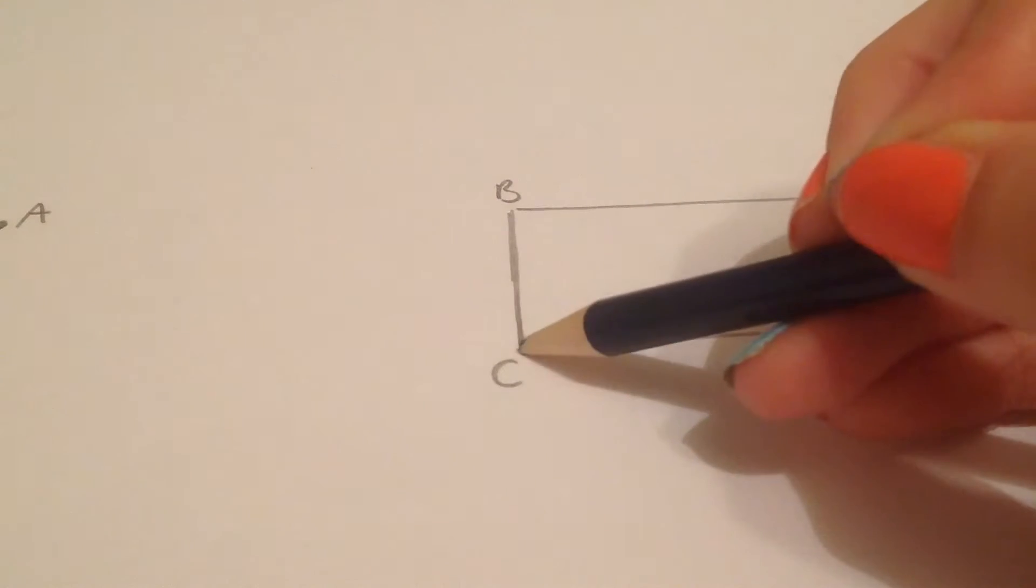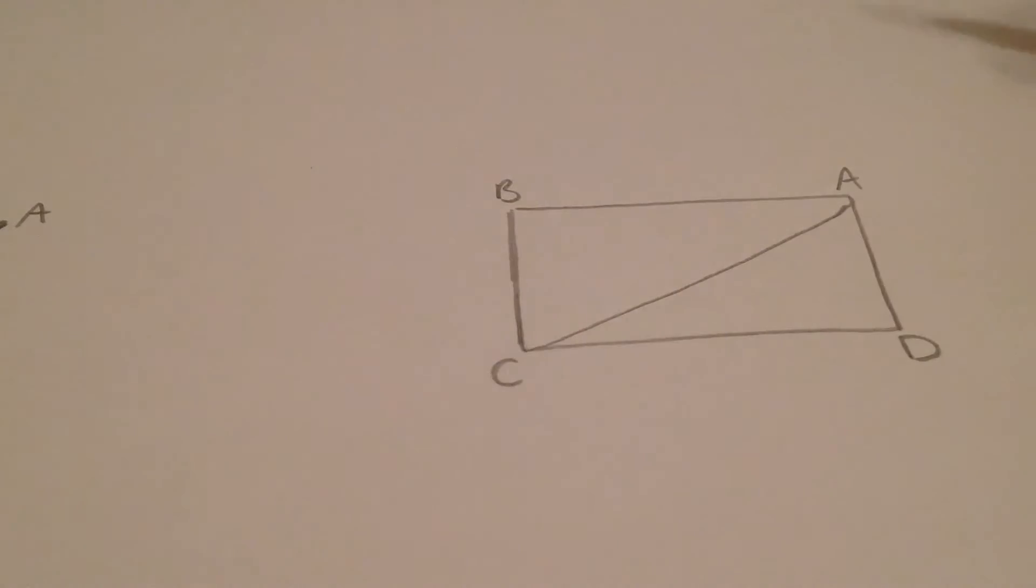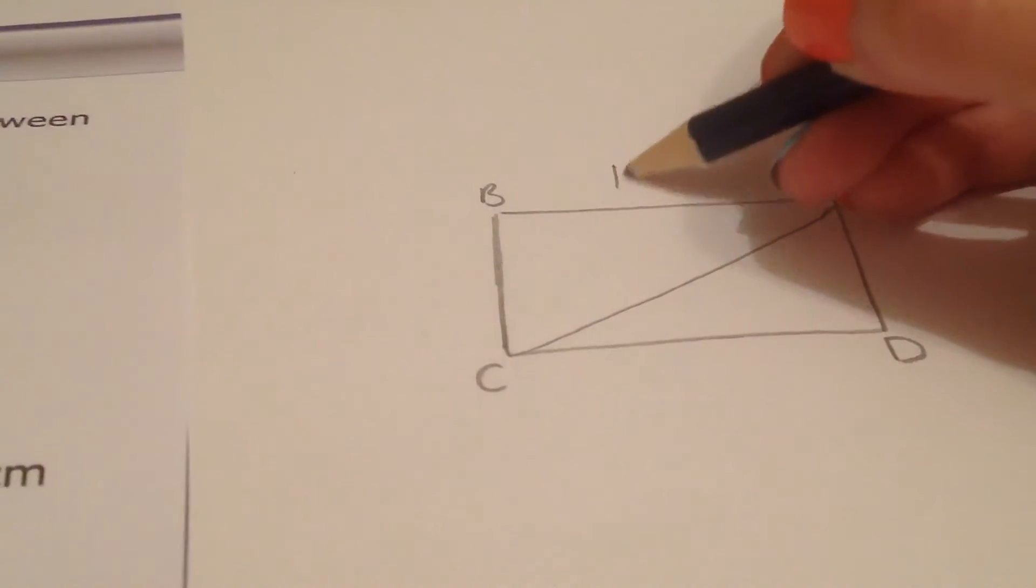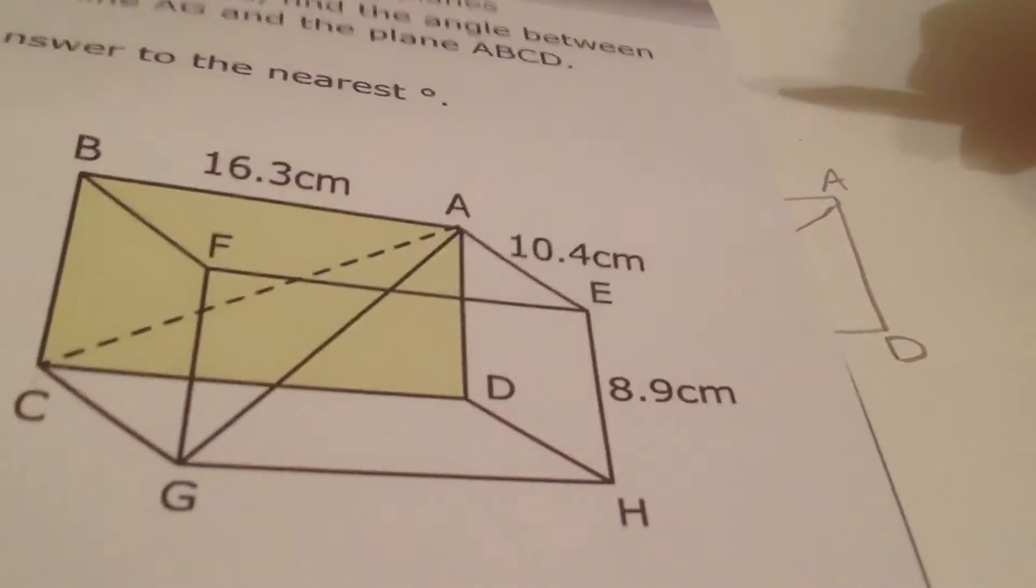So, let's have a look at the diagonal of the back face. We're looking from A to C. Taking the measurements, we can see that the measurements at the back face are 16.3 and 8.9.